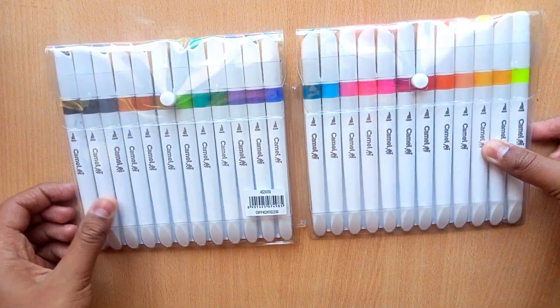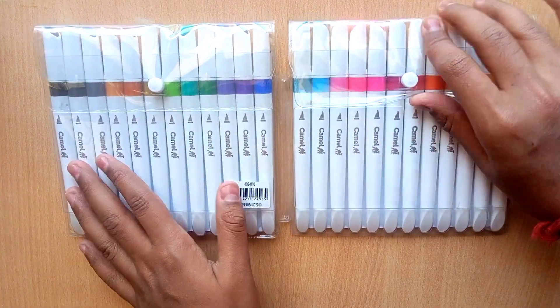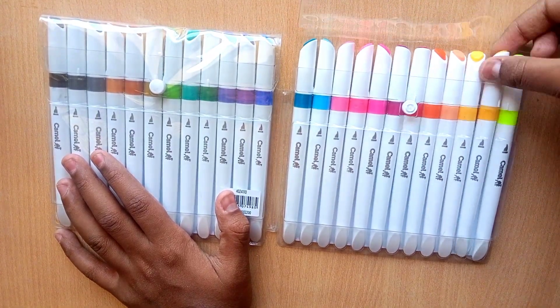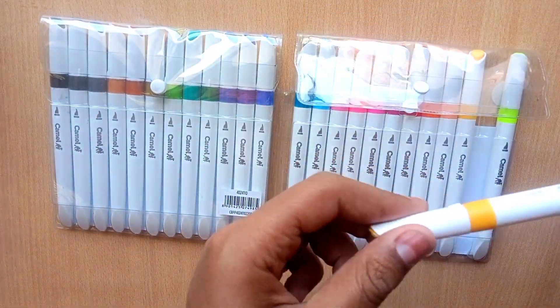First of all, I will tell you that these Camelink brush pens are 24 shades and the price of the Camelink brush pens is 420 rupees. So yeah, without wasting any time, let's begin.